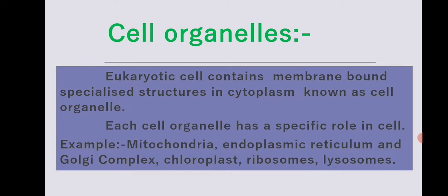For example, the cell organelles present in the cytoplasm of eukaryotic cells include: mitochondria, endoplasmic reticulum, Golgi complex, chloroplasts, ribosomes, lysosomes, and others. These are the cell organelles which are present in the cytoplasm of the eukaryotic cell.